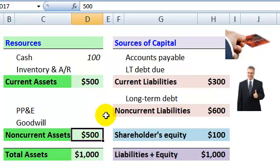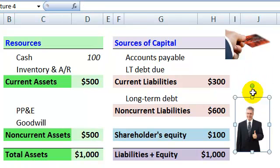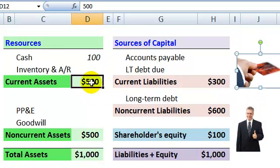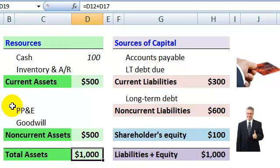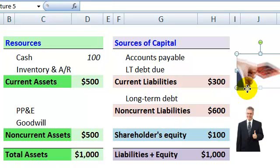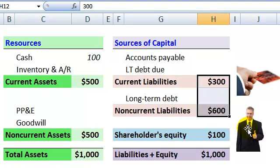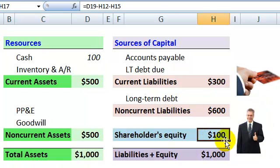Our simplified balance sheet matches because on the left we have current assets of $500 plus non-current assets of $500, equals total assets of $1,000. On the right-hand side we have the claims on those assets: $900 by the debt holders who have a prior claim, and then the shareholders who have a residual claim of $100. So the balance of $1,000 equals $1,000 left and right.